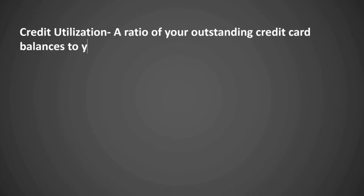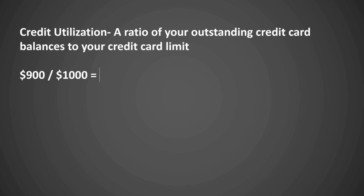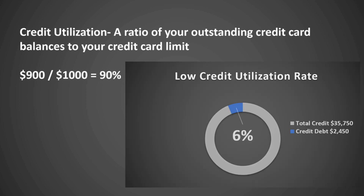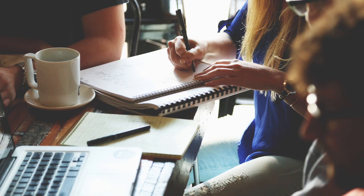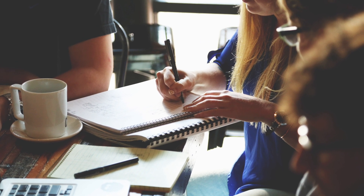Credit utilization is simply a ratio of your outstanding credit card balances to your credit card limit. For example, if your credit card balance is $900 and your credit limit is $1,000, then your credit utilization is 90%. The lower your credit utilization, the better it is for your credit score. This shows lenders that you're only required to use a small portion of the credit that has been approved for you. Lenders like to see this because it illustrates to them that you are a responsible borrower with excellent self-control. Customers who consistently have a low credit utilization are much less likely to default on their loans, lowering the lender's overall risk on their investment. On the other hand, customers who consistently utilize 90% of their credit limit on multiple credit cards are much less likely to pay their bills on time.